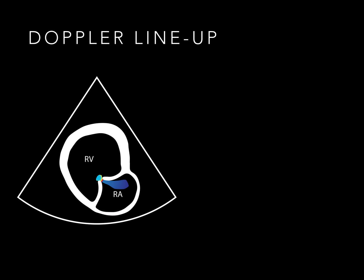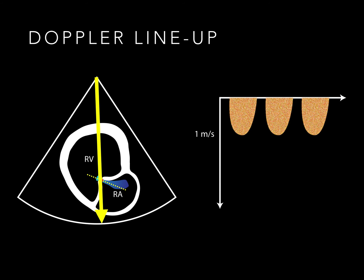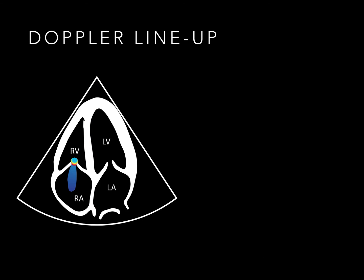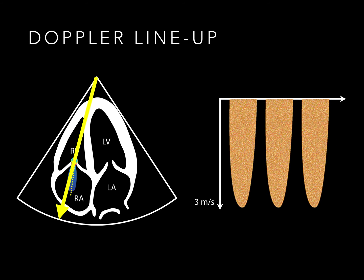Because Doppler only measures velocities towards or away from the probe, we need a good line-up. For example, in this RV inflow view, the tricuspid regurgitation jet is almost going laterally, but the machine only measures the part of the flow in line with the cursor arrow. So the machine will give us a relatively low peak velocity, and when we plug this into the modified Bernoulli equation to figure out the right ventricular systolic pressure, it will be a dramatic underestimate. Here we've looked from the apical four-chamber and got a much better line-up, within 20 degrees of the arrow, so we get a much higher peak velocity and a more accurate right ventricular systolic pressure estimate.